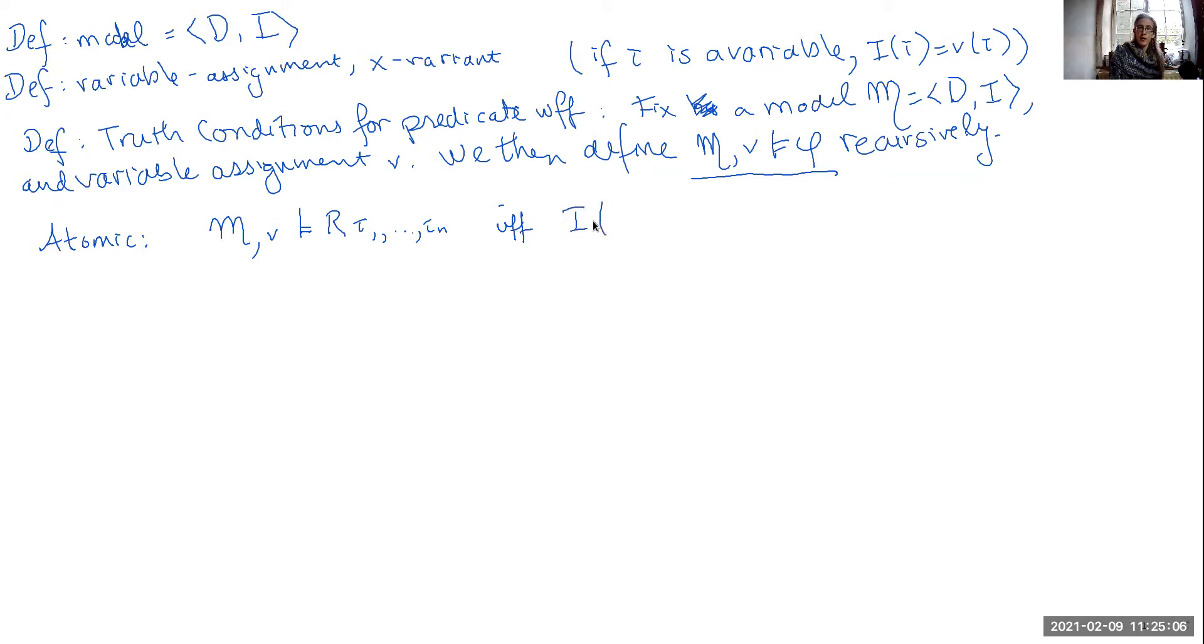This is going to be true if and only if, if you take the interpretation of each of the terms, from 1 to N, in order, if that tuple is actually a member of the interpretation of R. So R is an N-ary relation, its interpretation is sequences of objects in the domain. If one of those sequences is whatever each of these terms is interpreted for, then the sentence will be true.